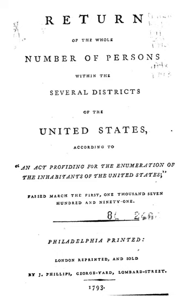In the first census, the population of the United States was enumerated to be 3,929,214. Congress assigned responsibility for the 1790 census to the Marshals of United States Judicial Districts under an Act which, with minor modifications and extensions, governed census taking until the 1840 census. The law required that every household be visited, that completed census schedules be posted in each jurisdiction there to remain for the inspection of all concerned, and that the aggregate amount of each description of persons for every district be transmitted to the president.